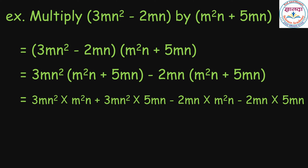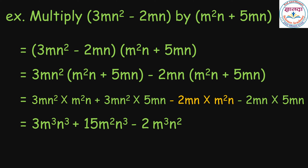After multiplication we get 3m cube n cube, plus 15m square n cube, minus 2m square n square, minus 10m square n square. As there are no like terms after multiplication, we get the final answer.